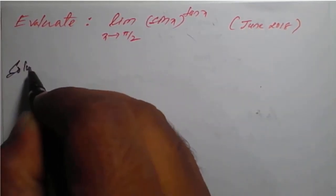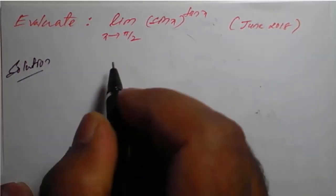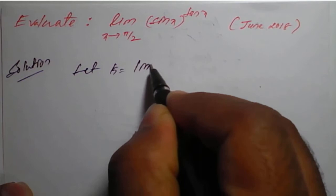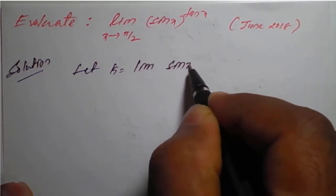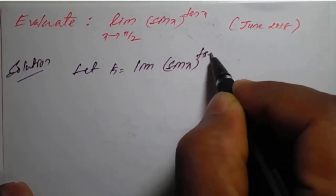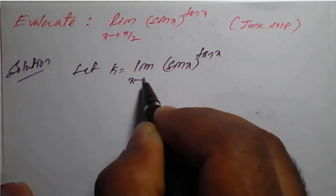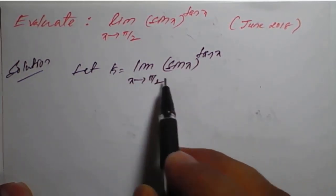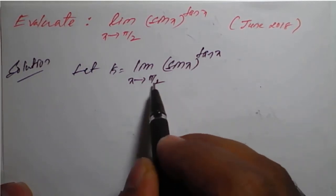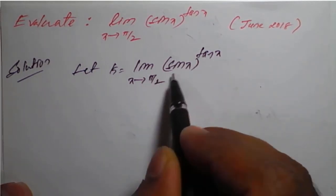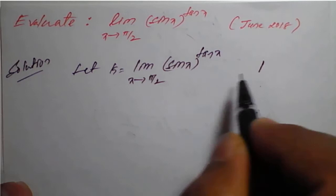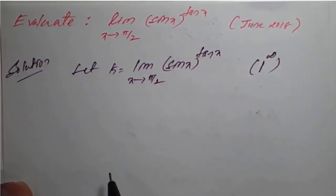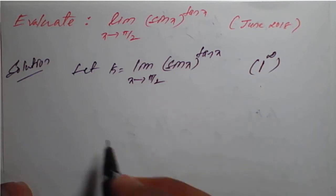For the solution, let k be equal to the limit of sin(x) raised to tan(x) as x tends to π/2. We need to check: if we replace x = π/2, sin(π/2) is 1 and tan(π/2) is infinity. So you can see it is a 1 raised to infinity form.